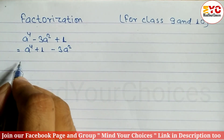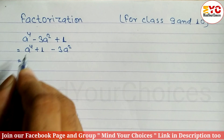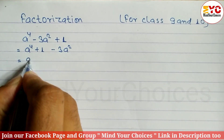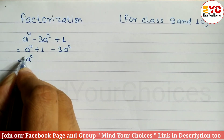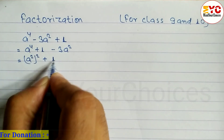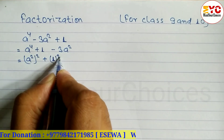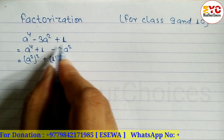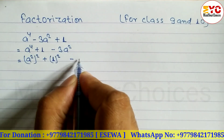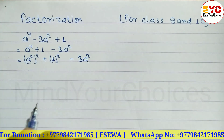After arranging this, we have to convert it into the form of a² plus b². Here a⁴ can be written as (a²)², and the square root of 1 is 1, so we can write 1². The last term, 3a², stays the same — we write 3a².